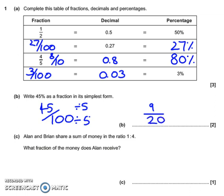Part C. They share the money in the ratio 1 to 4, so that means Alan's getting 1 part, Brian's getting 4 parts, so there are 5 parts altogether — so it's going to be out of 5. Alan's getting 1 part, so he gets 1 out of 5: 1 fifth.